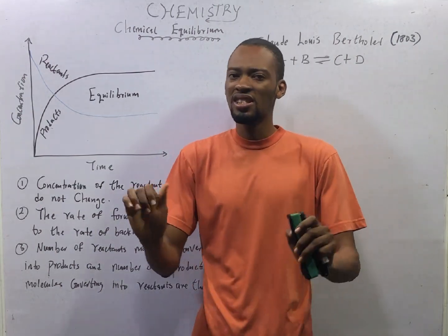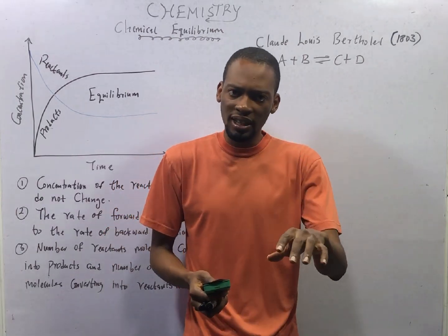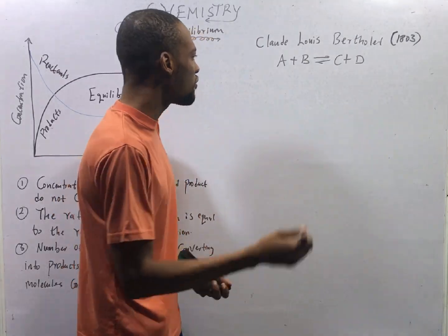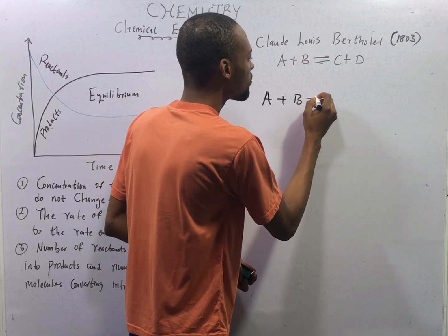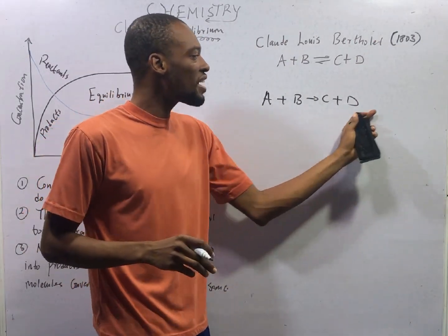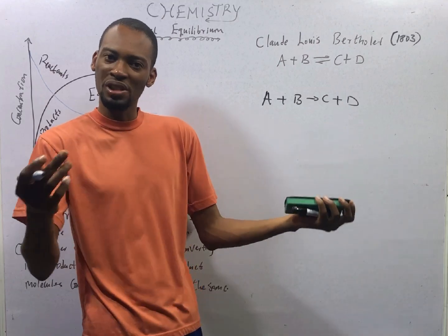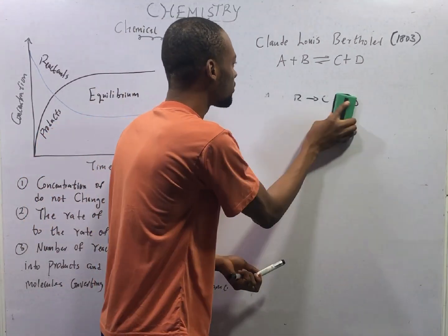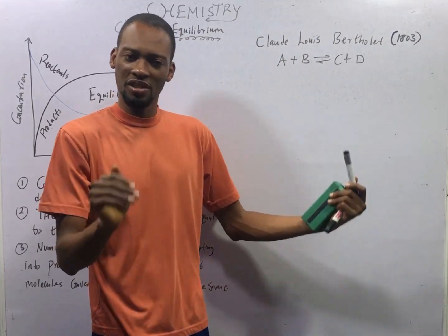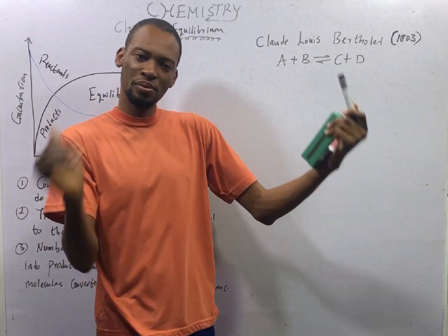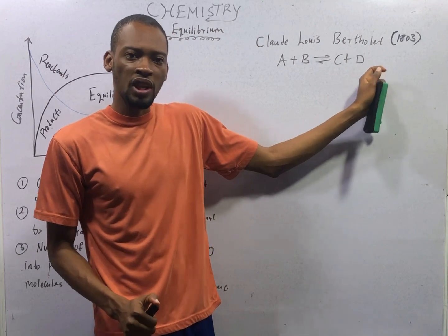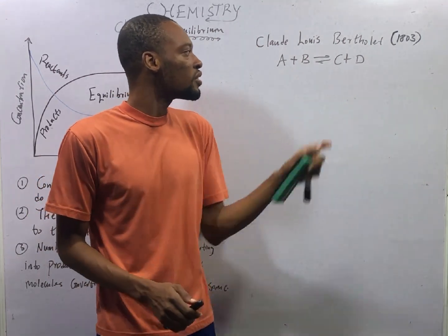This is a very interesting concept. Before 1803, it was believed that all reactions are irreversible, which means if A reacts with B, we form C and D — in any case, the reverse reaction was perceived to be impossible. In 1803, Claude Louis Berthollet discovered the reversibility of reaction. He discovered reversible reaction, which means if A reacts with B to give us C and D, there is a possibility of C reacting with D to give us A and B.